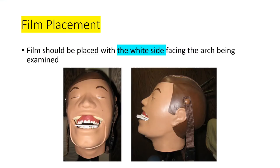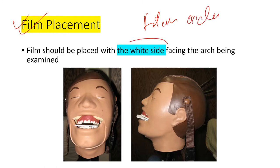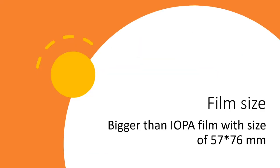For film placement in occlusal radiography, the white side of the film faces the arch being examined. So if we are taking an x-ray of the maxillary arch, the white side faces the maxillary arch.